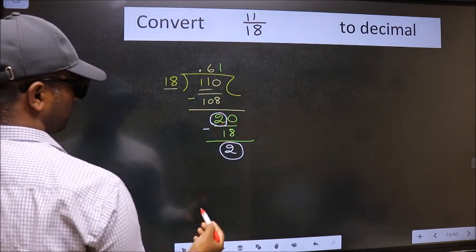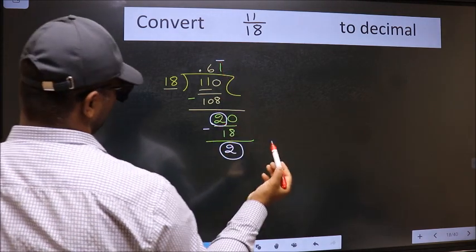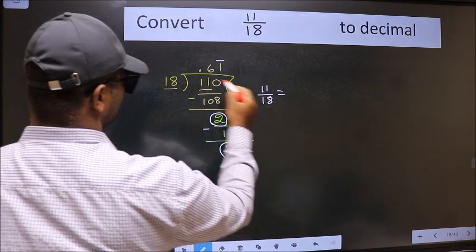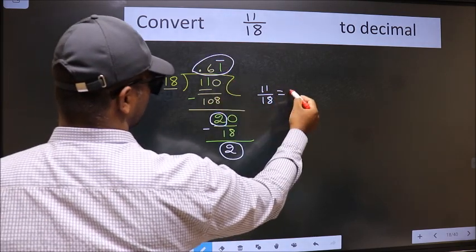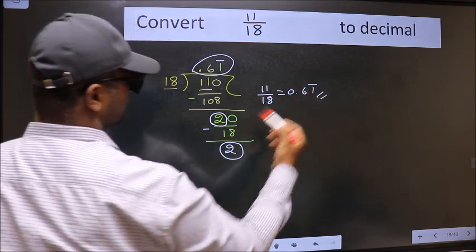Earlier also we got 2, that means we get bar on this number. Therefore, decimal of 11 by 18 is 0.61 bar on this number. This is our answer.